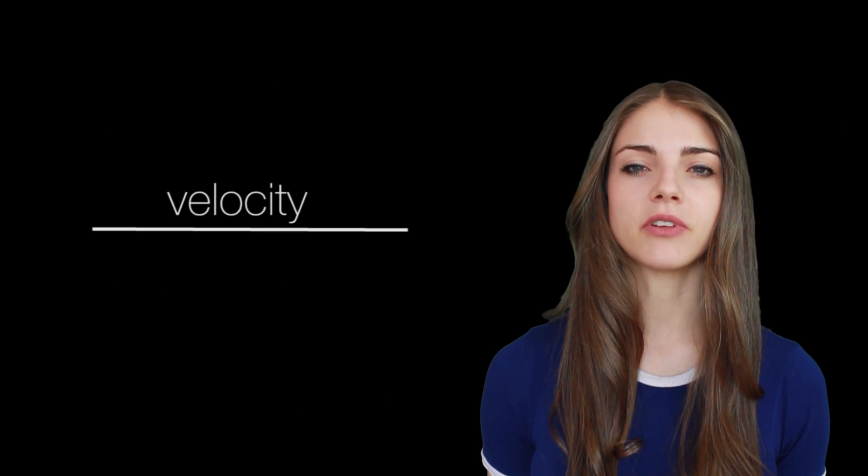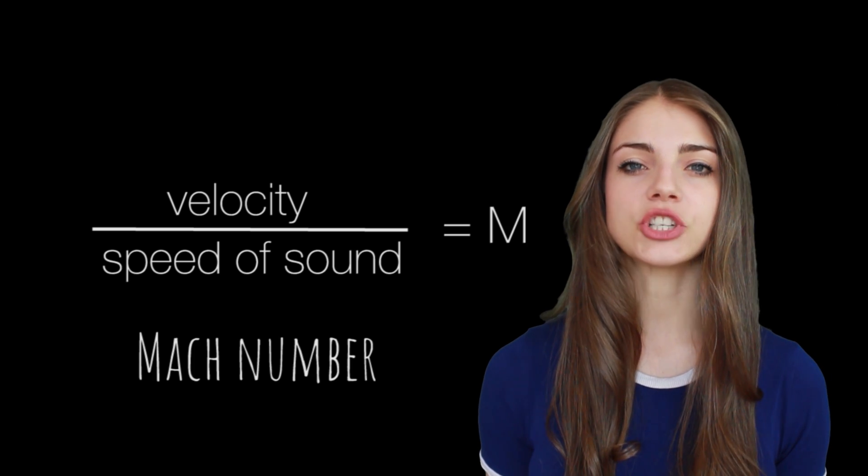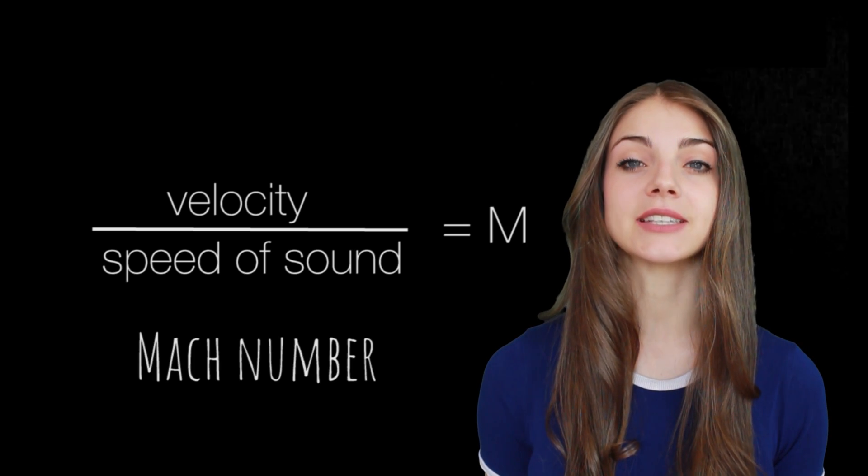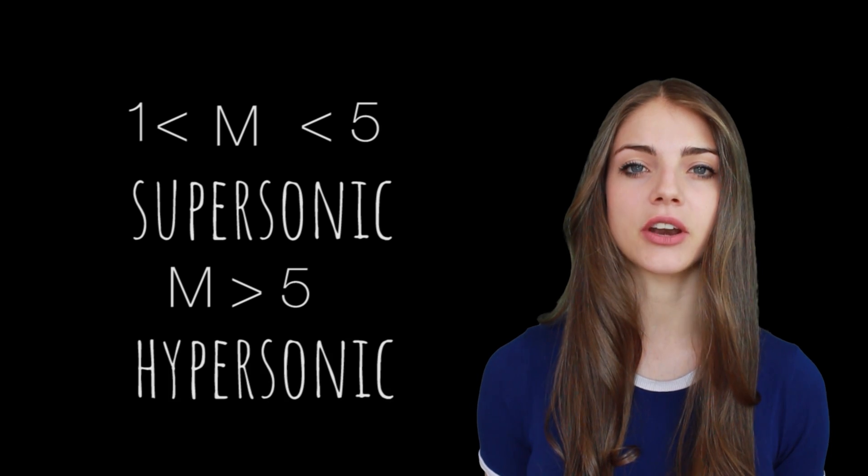The ratio between the velocity of the flow and the speed of sound is called the Mach number, which equals 1 if the flow is running exactly at the speed of sound. If the Mach number is between 1 and 5, the flow is called supersonic, and if it's greater than 5, it's called hypersonic.